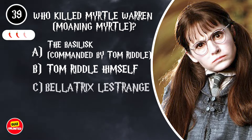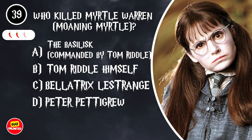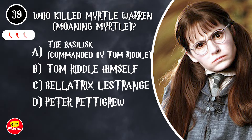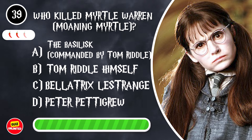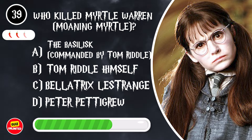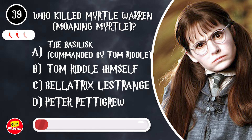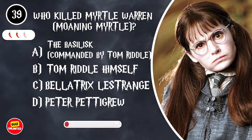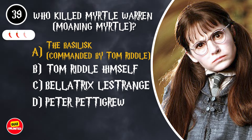Who killed Myrtle Warren, Moaning Myrtle? A. The Basilisk, commanded by Tom Riddle. B. Tom Riddle himself. C. Bellatrix Lestrange. D. Peter Pettigrew. It's A. The Basilisk commanded by Tom Riddle.